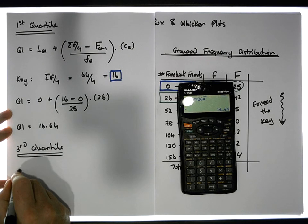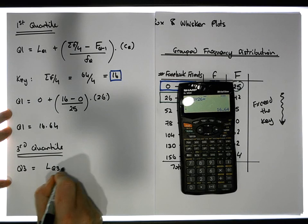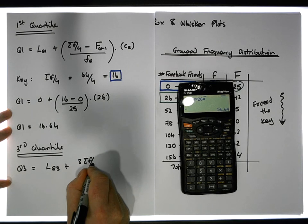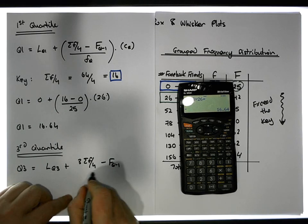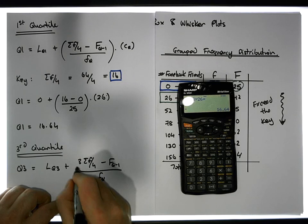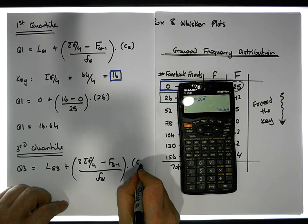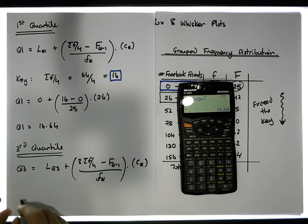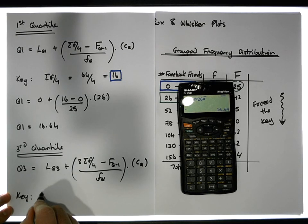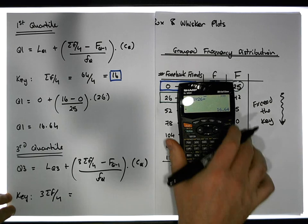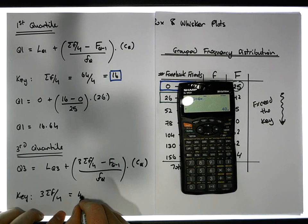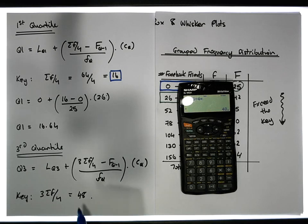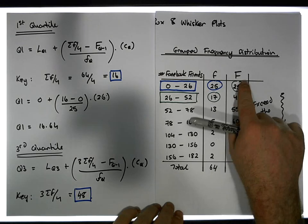Now let's calculate the third quartile. Q3 is equal to L of Q3 plus 3 times σf over 4, minus capital F of Q minus 1, divided by small f of Q, multiplied by the width of the quartile class. The key in this case is 3 times σf over 4, which equals 3 times 64 divided by 4, giving us a key of 48. This will allow us to identify our third quartile class, so we go down through the cumulative frequencies to find it.